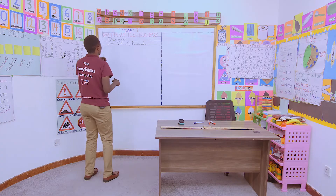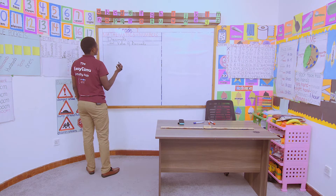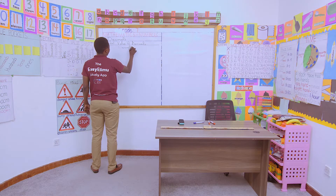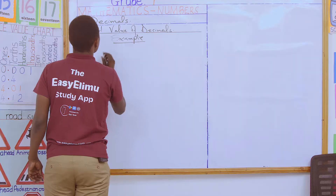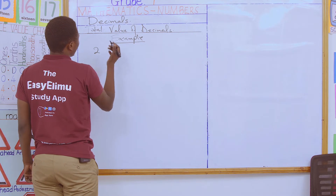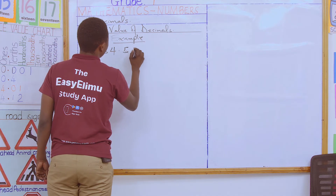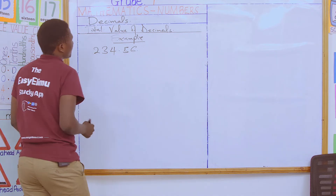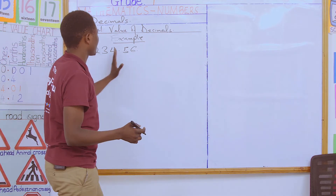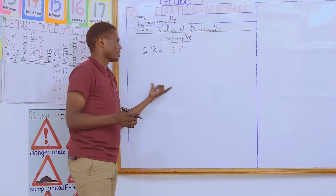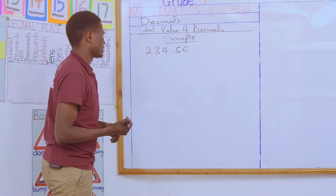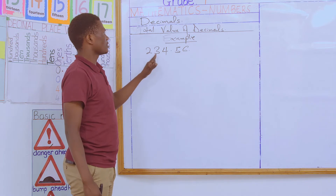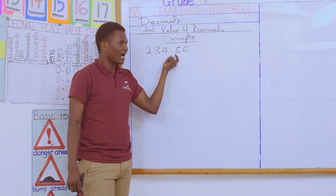Are we together? So for example, let me just start with the total value of a normal number. If you have a number like 234.56, and you have been asked to get the total value of each and every digit in this particular number — this is a decimal number. Why? It has got the whole number part and the fractional part separated by a decimal point. So the first thing you need to know is the place value of each and every digit. Then afterwards, to get the total value, you multiply the digit and its place value.